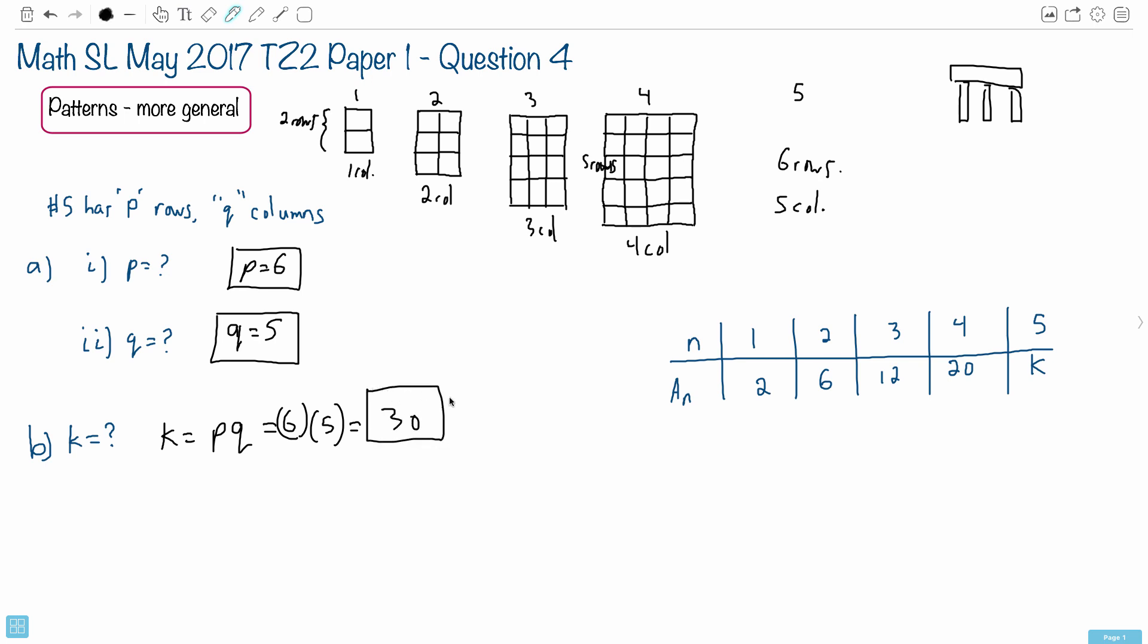That's how we solve this. So see what that's really telling us, that if you had 6 rows and 5 columns, 6 times 5 would indeed be 30.